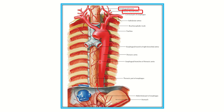In the thoracic part, we can see different branches arising directly from the thoracic aorta — the esophageal branches of the thoracic aorta supply the thoracic esophagus. Here, this is the cervical part of the esophagus, and the esophageal branch here is derived from the inferior thyroid artery.